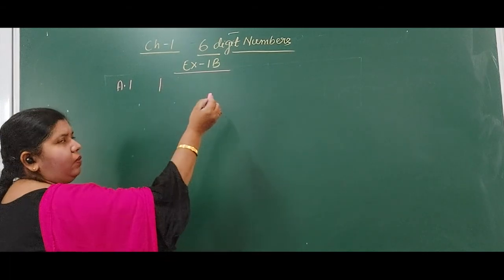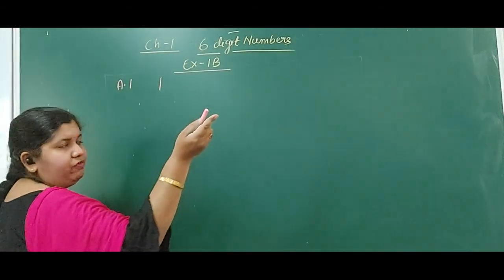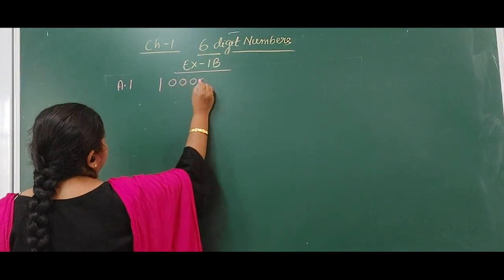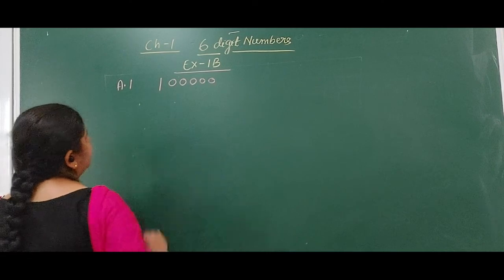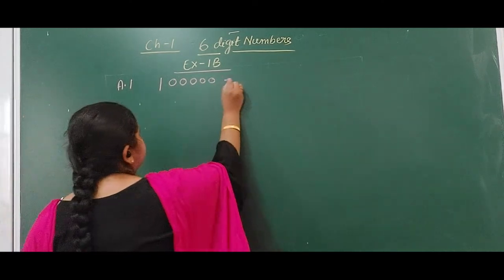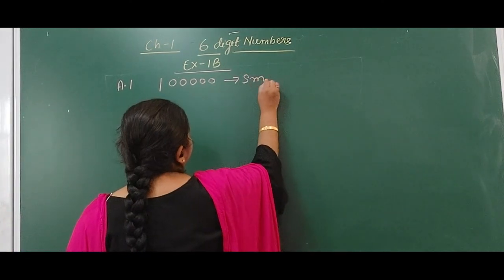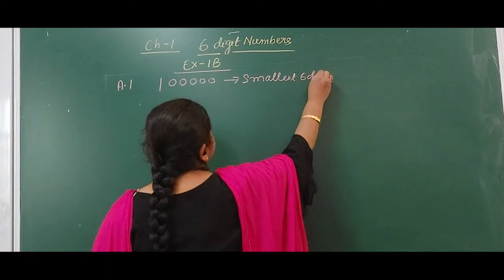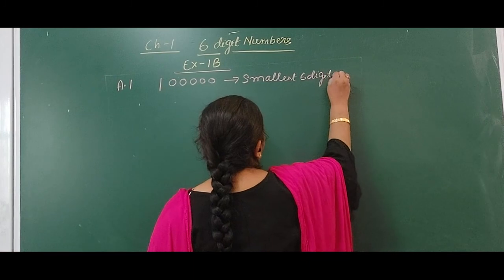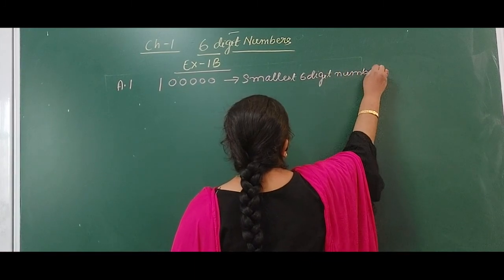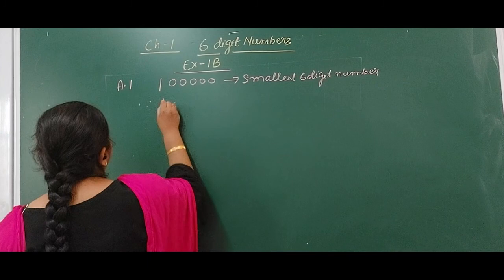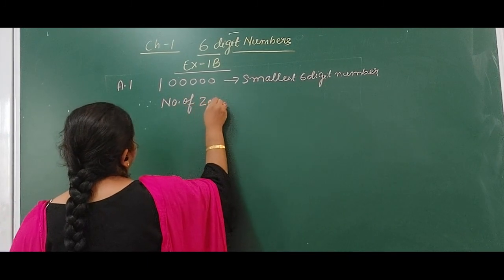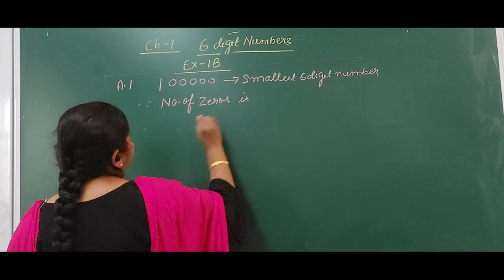The rest — how many digits are left in a 6-digit number? 5 digits are left, so you put 5 zeros. So this is the smallest 6-digit number: 1,00,000. Therefore, the number of zeros is 5.